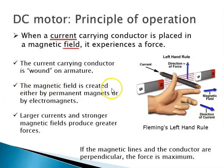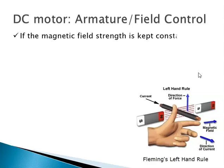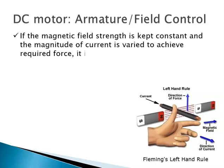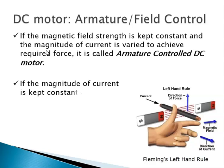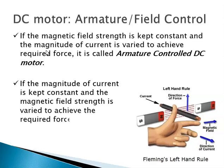The magnetic field is created either by permanent magnets or by electromagnets. There are two variables we can use to control: current and field. The larger the current, the more will be the force; the larger the field, the more will be the force. Because there are two variables — field and current — there are two possibilities: you can keep the field constant and vary the current, or keep the current constant and vary the field.